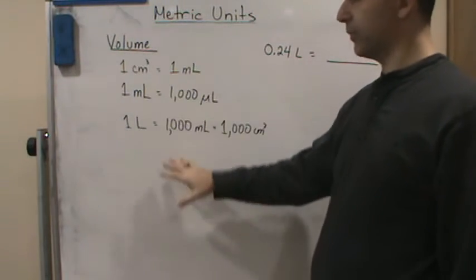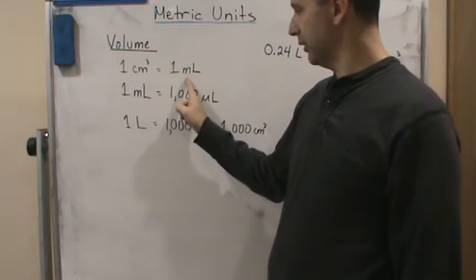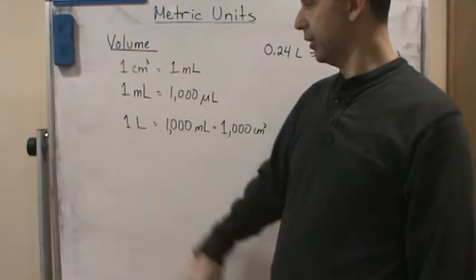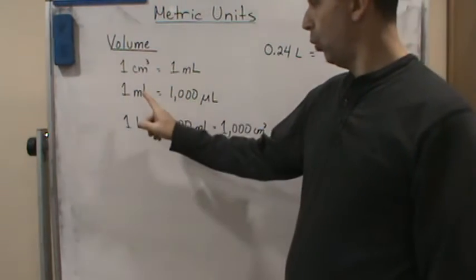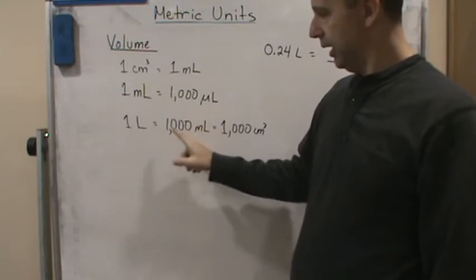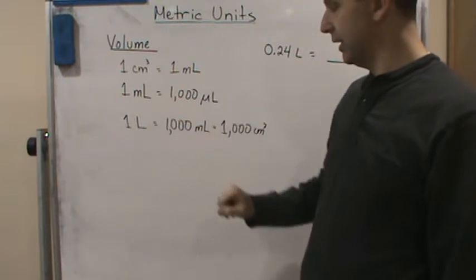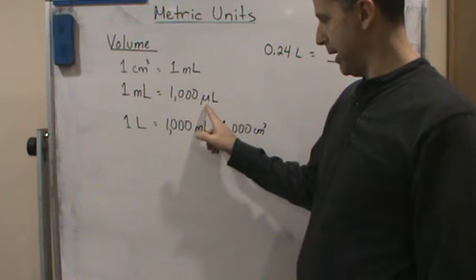So here are some conversions that you're going to want to know. For example, one milliliter is the same as one cubic centimeter. Also, one milliliter is equal to a thousand microliters. And one liter is equal to a thousand milliliters.